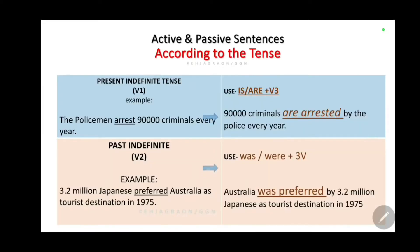First of all, present indefinite and past indefinite. Present indefinite uses the first form, which depends on the number of objects. Past indefinite is the second form. If we change to the passive form, we use the third form.